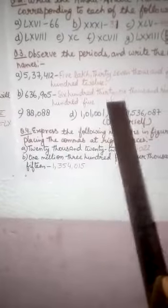Second is 636,905. Now, this is written in international system. Ones, tens, hundreds, thousands, ten thousands and hundred thousands. So, we will write 636,905.